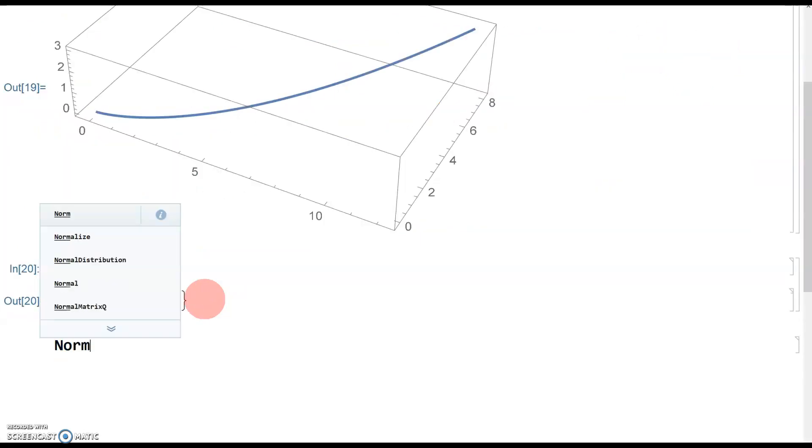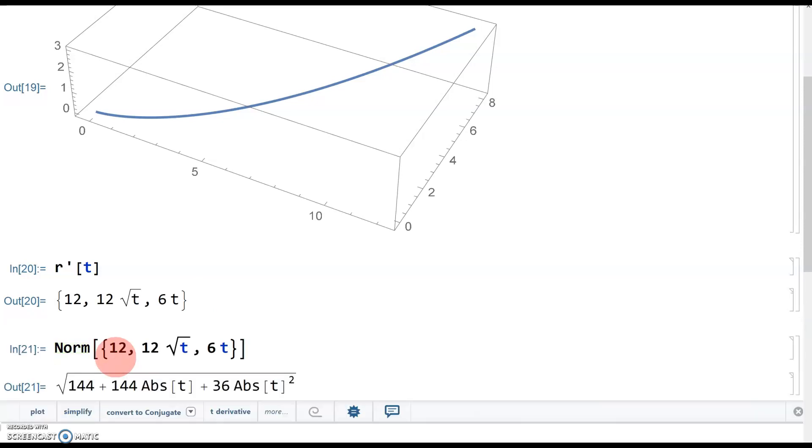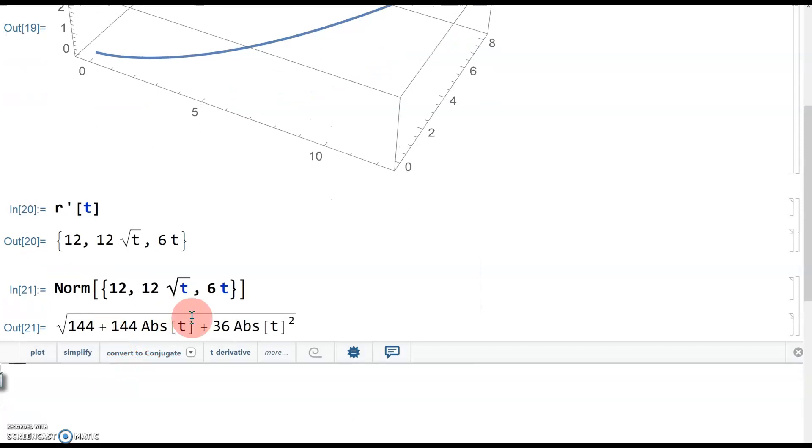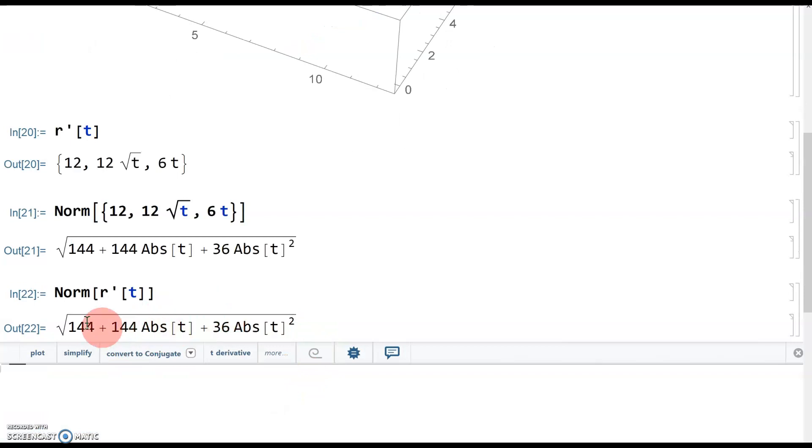And then the next step was to get the magnitude of that vector in terms of t. So in Mathematica, that's the norm command. So if you'd like, you can just copy and paste your derivative, whatever it turned out to be there. Control C, control V. So that works. And it gives you the same 144 plus 144 t plus 36 t squared. Or you can do norm of r prime of t, same answer. Now in Mathematica, just to avoid potential problems, they do absolute value of t. But in our case, t is just ranging from zero to one. So t is always positive or zero. So you can delete those absolute values.